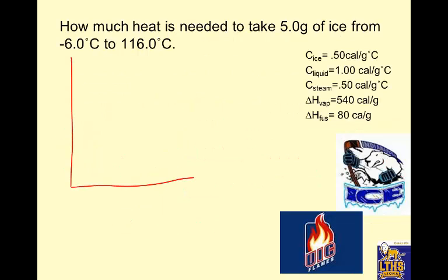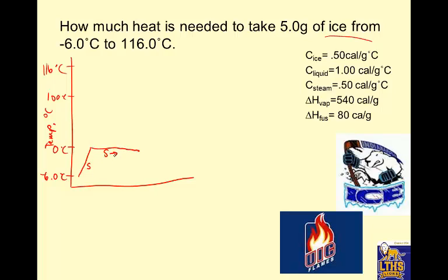Let's draw a graph to know how many calculations to do. We have ice starting at -6°C and ending at 116°C. For H₂O, melting occurs at 0°C and boiling at 100°C. The heating curve goes up as solid, then flat at 0°C (phase change to liquid), then up as liquid, then flat at 100°C (phase change to gas), then up to 116°C as gas — five sections, each gets its own Q.